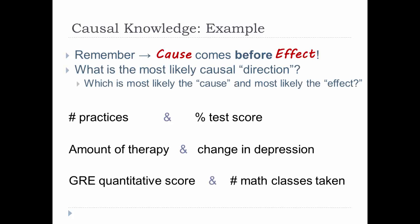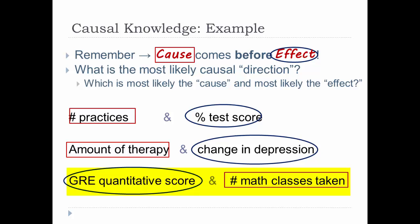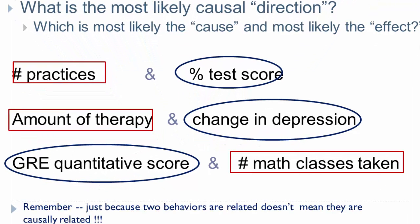Look at these examples, assuming that you've already established a relationship between two variables. Now, we've talked about this first one, percentage on the exam, and the number of practice problems. The assumption is that the number of practice problems completed occurred before the test score. So, the number of practice problems might be the cause affecting the resulting test score. How about the amount of therapy a patient may have and the change in depression levels? You've got it. The amount of therapy would be the cause that would result in a change in depression. And a final one, a student's score on the quantitative section of the GRE, the Graduate Record Exam, and the number of math classes a student has taken. The number of math classes could be the cause that could affect the GRE quantitative score. And remember that just because two behaviors are related doesn't mean that they are causally related. Perhaps an alternative cause may exist. A change in a person's life situation may cause a change in depression and not the amount of therapy received.